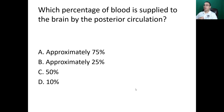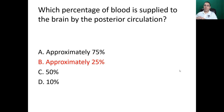First question: which percentage of blood is supplied to the brain by the posterior circulation? Remember we have an anterior circulation as well. The answer is B — the anterior circulation provides approximately 75% to the brain, while the posterior circulation provides approximately 25%. Remember the posterior circulation is formed by the vertebral arteries.